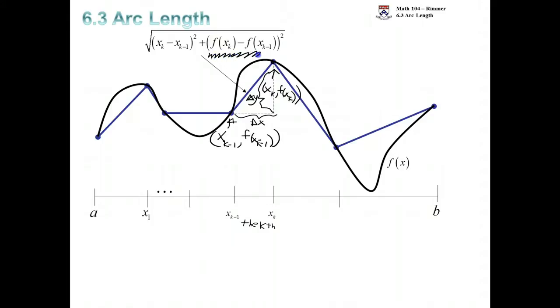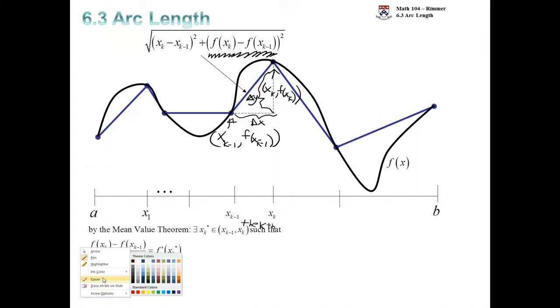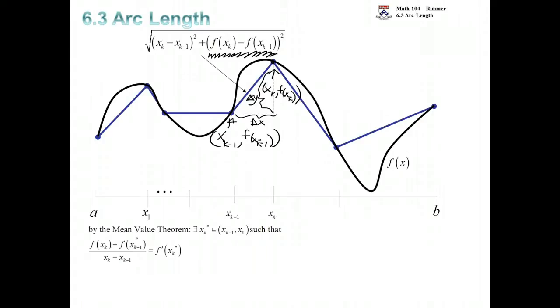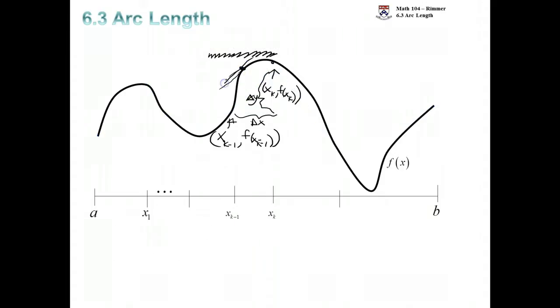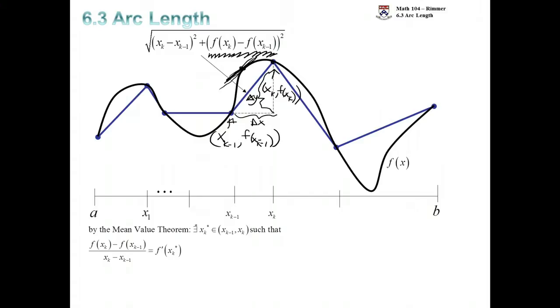We're going to focus our attention on the second part of this. Go back to a result from first semester calculus. The mean value theorem says some place in the interval, you can be guaranteed that your derivative will be equal to the slope of that secant line. Some place in here, there's some place where the tangent line slope is the same as that secant line slope. There's some place here, xk star, where the secant line slope is the tangent line slope.